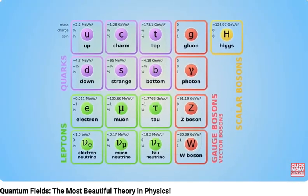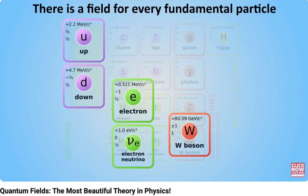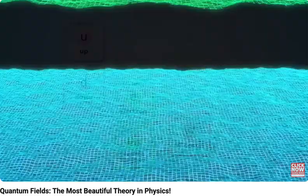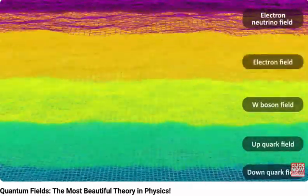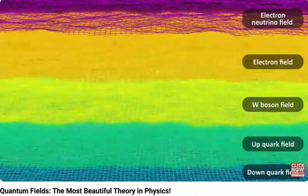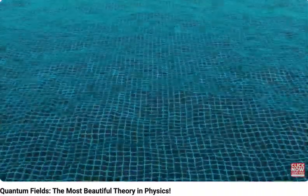There is a field for every particle of the standard model. So in our beta decay example, there would be a field for the down quark, the W boson, the up quark, the electron, and the antineutrino. All these fields extend out in all of spacetime. In other words, the fields are always there and exist everywhere, including inside your body. Now, although they exist everywhere, and you can't see them, they are not nothing.